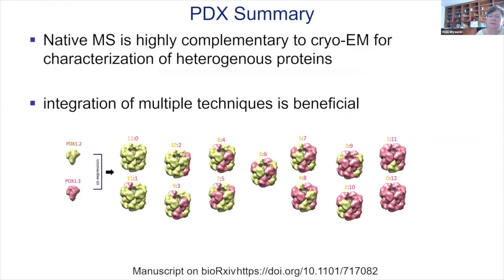We are continuing fragmentation analysis on all the possible mixtures to get a good handle on how these things are mixing during expression. We've clearly ruled out what the community previously thought — there is definite inter-mixing of 1.2 and 1.3 within the structure. This paper is available on BioRxiv if you want to look at the most recent version.